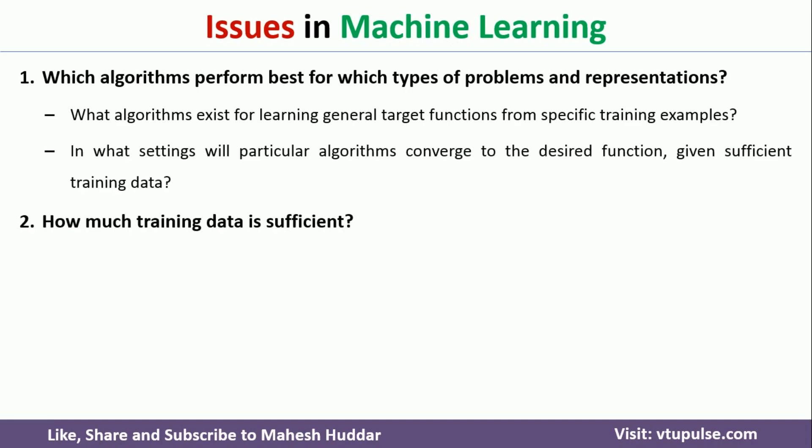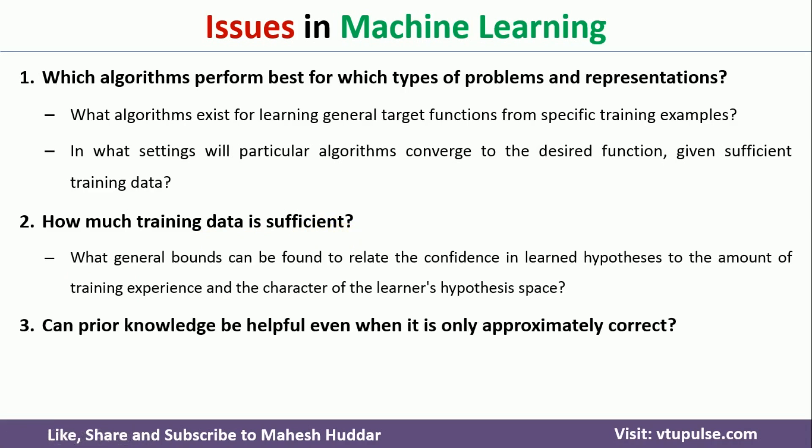The second issue is how much training data is sufficient to train a particular model. When it comes to machine learning, we train the model with the help of past data, but how much data is supposed to be considered? There is no fixed rule — whether to select a hundred, a thousand, or a million examples. There is no thumb rule, and that is a very difficult question and another issue in machine learning.